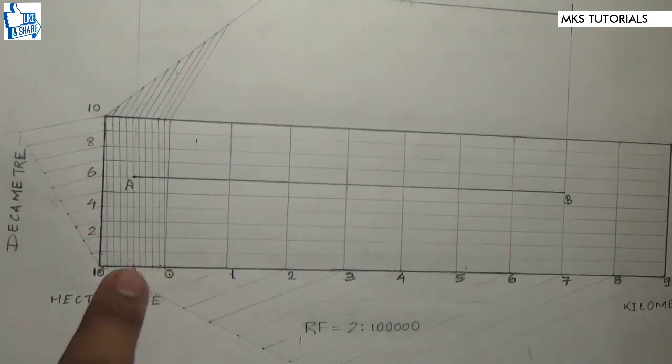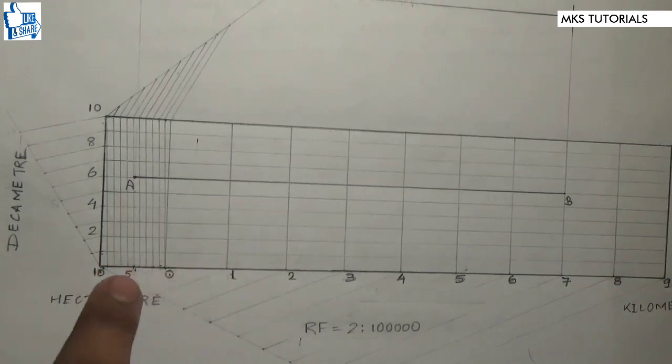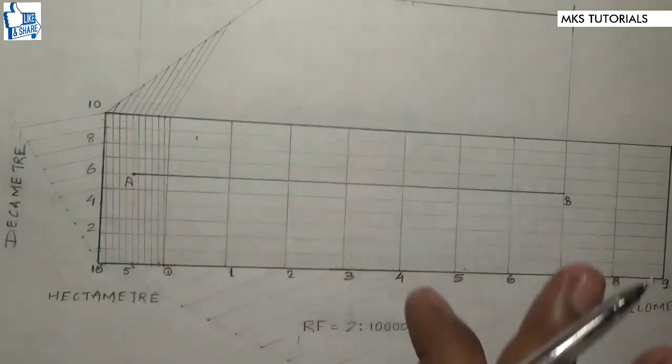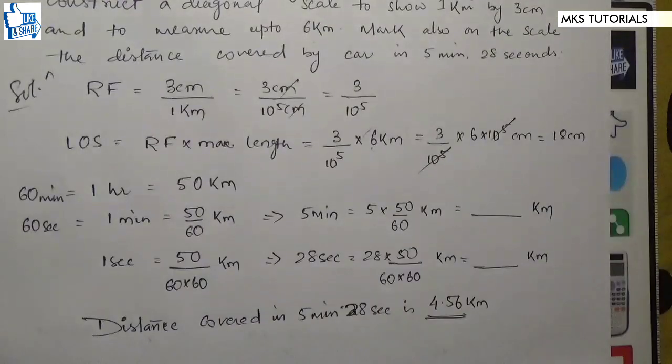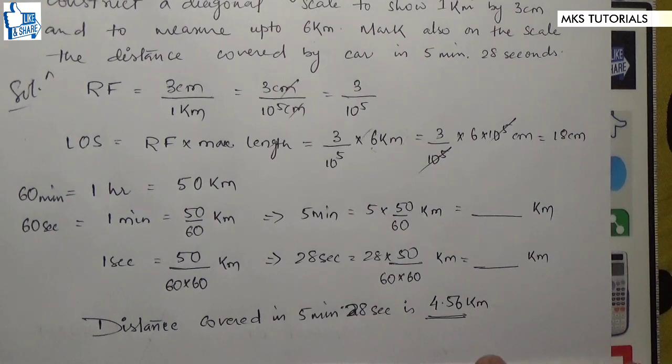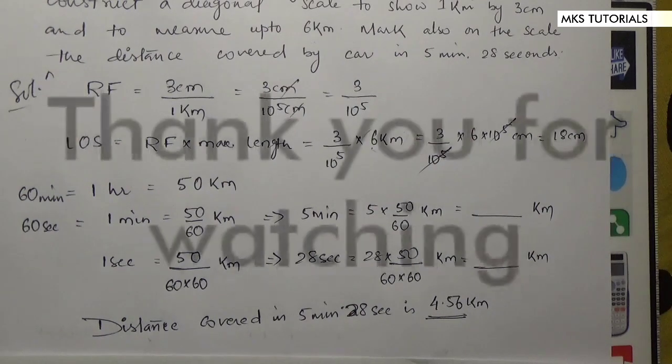These steps are made of this, but finally we have asked if we have 4.56 km to show, which you can easily show. 4 will be a kilometer, 5 will be a hectometer, and 6 will be decameters.